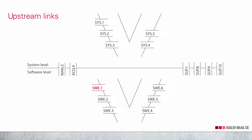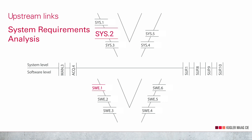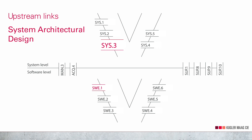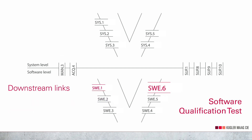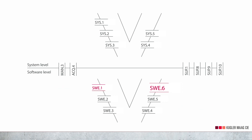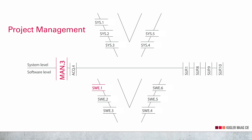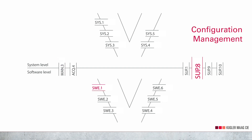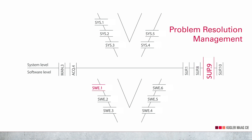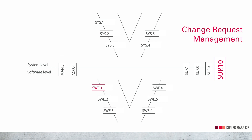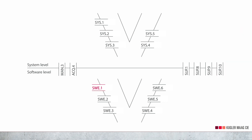This process has strong links upstream to Sys2 System Requirements Analysis, Sys3 System Architectural Design, and downstream to Software Architectural Design SWE2, and Software Qualification Test SWE6. Other processes with strong dependencies are Project Management MAN3, and Configuration Management SUP8, for instance because of Release Management, and SUP9 Defect Management, and SUP10 Change Request Management. The connection here is that defects identified in the tests have to be addressed, and bug fixes and change requests have to be addressed in the regression tests.